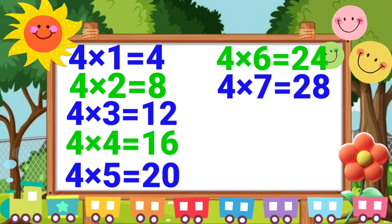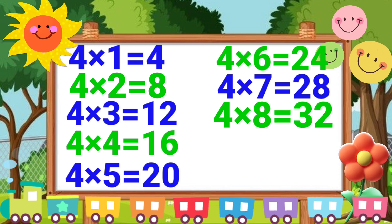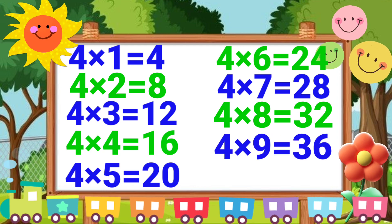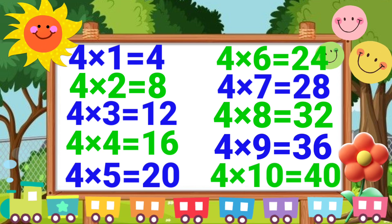Four sevens are twenty-eight. Four eights are thirty-two. Four nines are thirty-six. Four tens are forty.